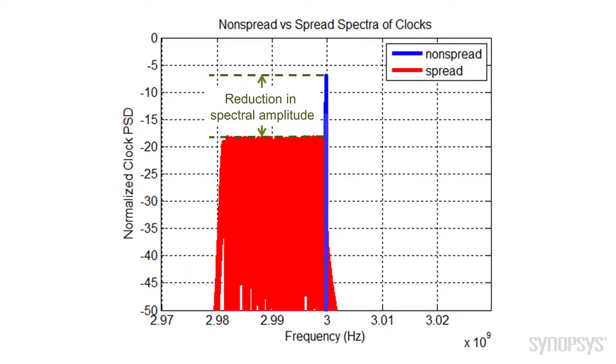In this example, we can see the spectra of two clocks, one that is spread and one that is not spread. The non-spread clock has a very narrow spectrum that's high in amplitude, and that represents a very strong RF interferer to neighboring systems.